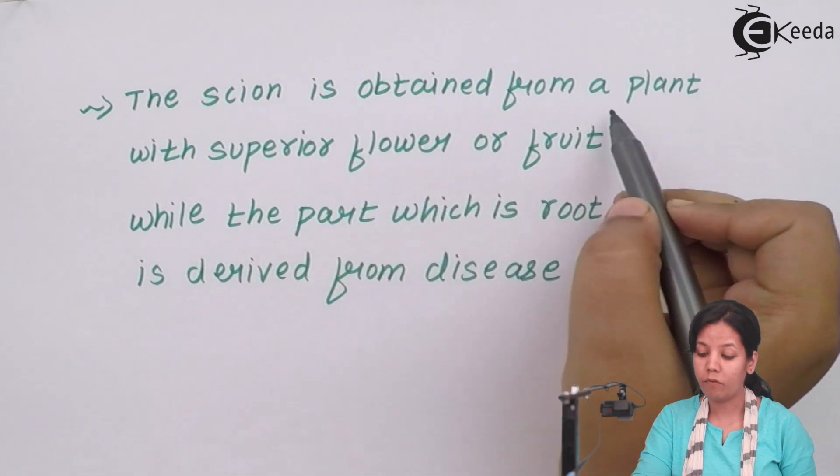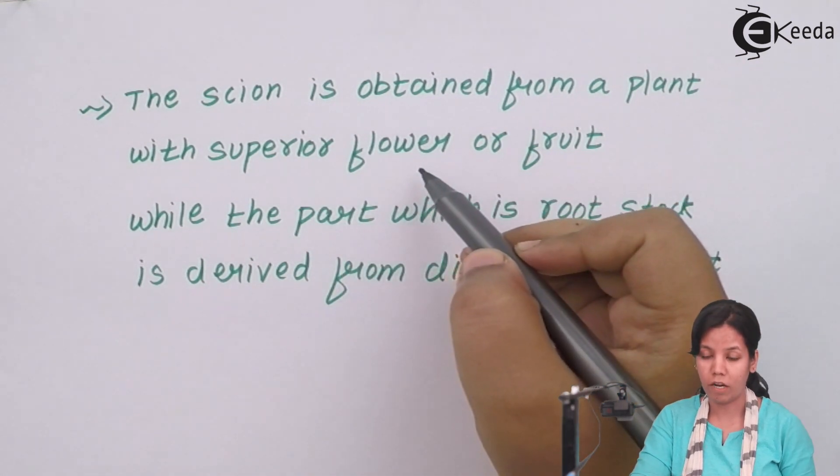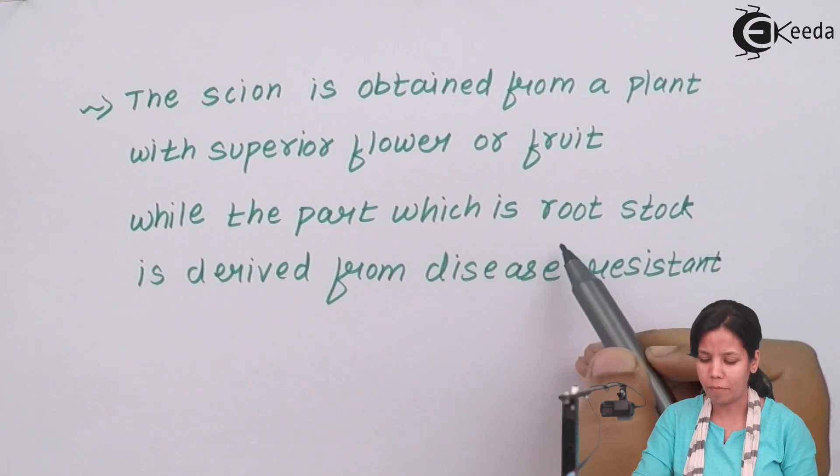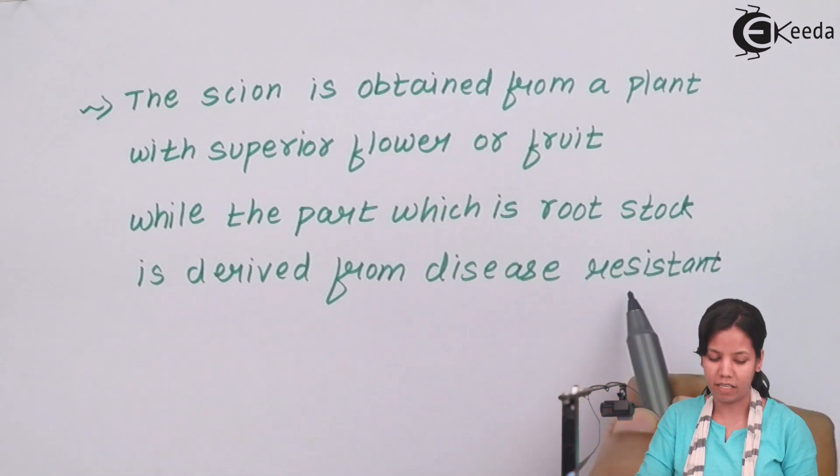This scion is obtained from a plant which has superior flowers or fruit, while the part of the root or the stock part is derived from a disease-resistant plant.